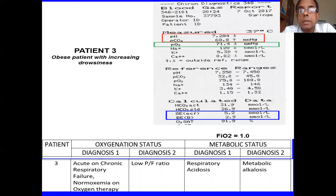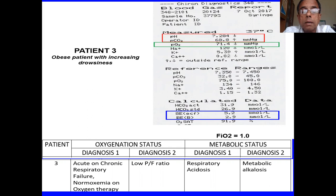Patient three: obese patient with increasing drowsiness. Looking at the values, the patient has an acute on chronic respiratory failure. The person is on 100% oxygen but is not hypoxic; however, we still diagnose respiratory failure because it is diagnosed based on room air values. There is a low PF ratio, a respiratory acidosis, and a metabolic alkalosis.